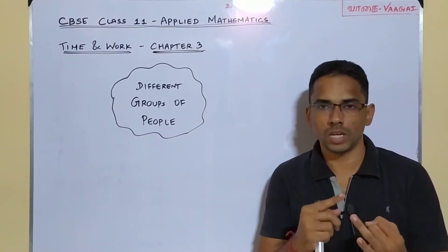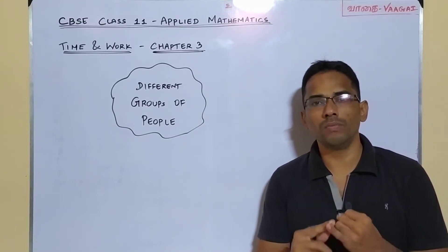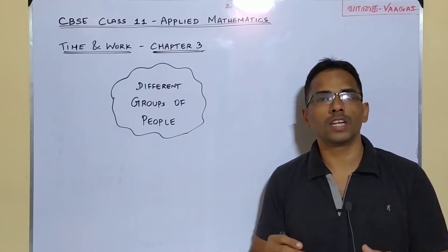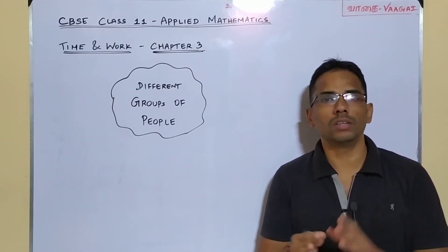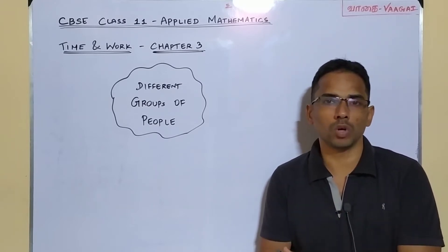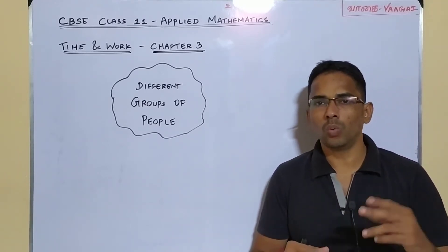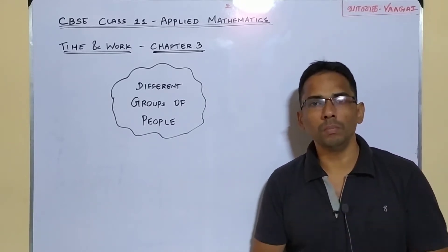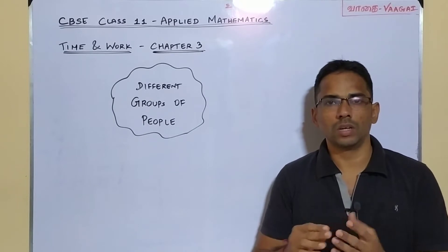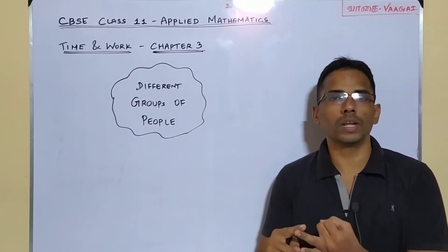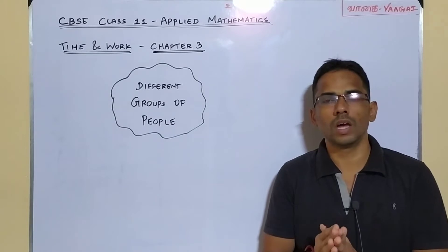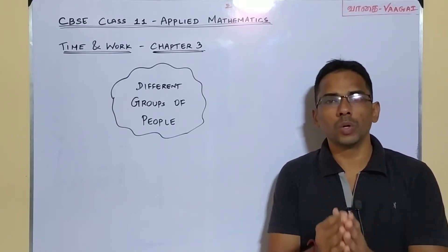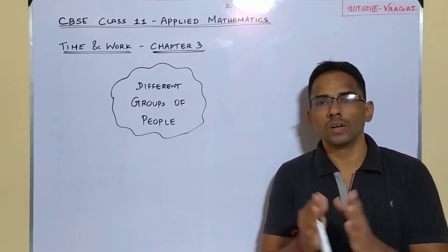We have already completed Chapter 1 and Chapter 2. In Chapter 1, we saw the comparison between manpower and time, then the relation between manpower, time and work — we solved some problems based on those concepts. In Chapter 2, we saw how to work a time and work problem in two ways: by fraction method and by unitary method. We had a comparison between the methods and it is up to you to follow whichever method you feel comfortable with.